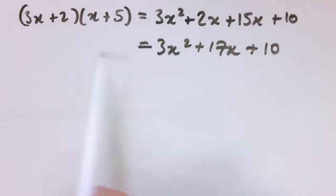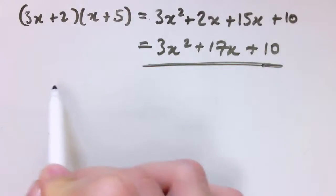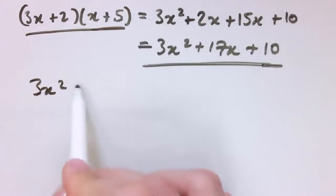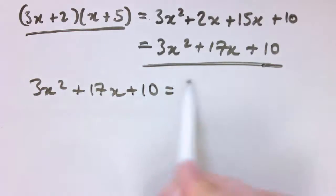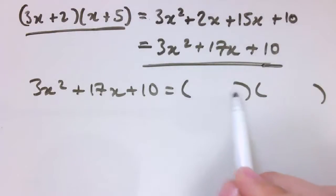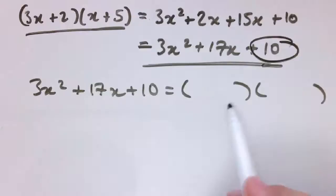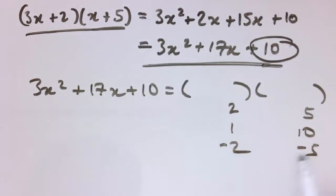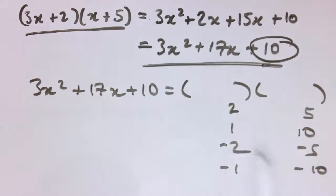Looking at 3x squared plus 17x plus 10, I know it factors into two brackets of the form something plus or minus something. For the numerical parts, they've got to multiply together to give 10, so it could be 2 and 5, or 1 and 10. It could also be minus 2 and minus 5 or minus 1 and minus 10, but because everything here is positive there are no negative terms, so it's got to be either 2 and 5 or 1 and 10.